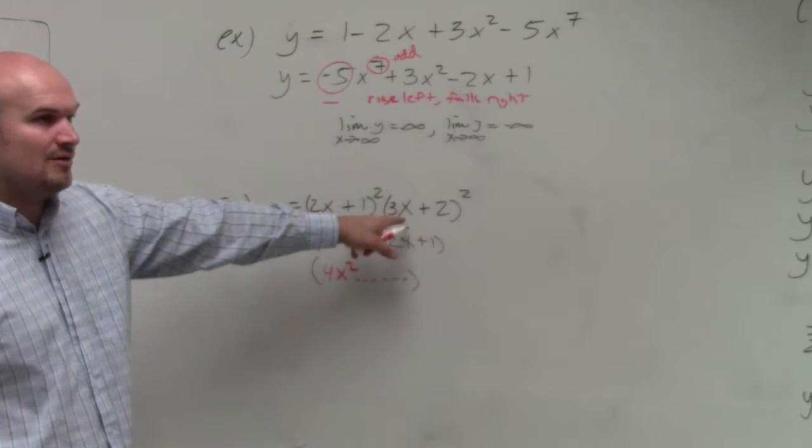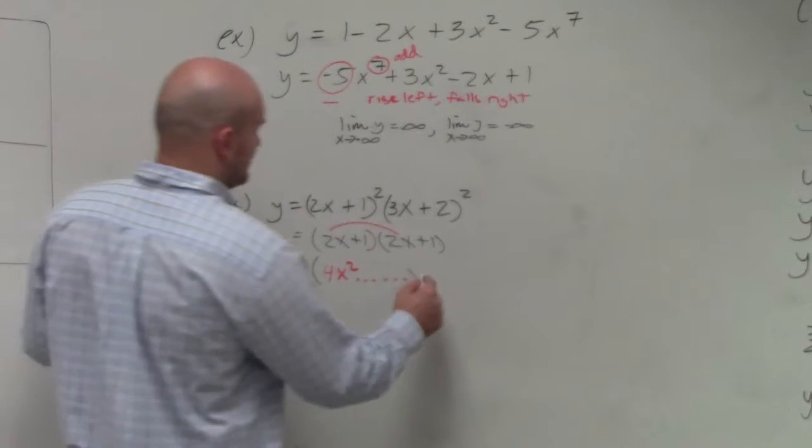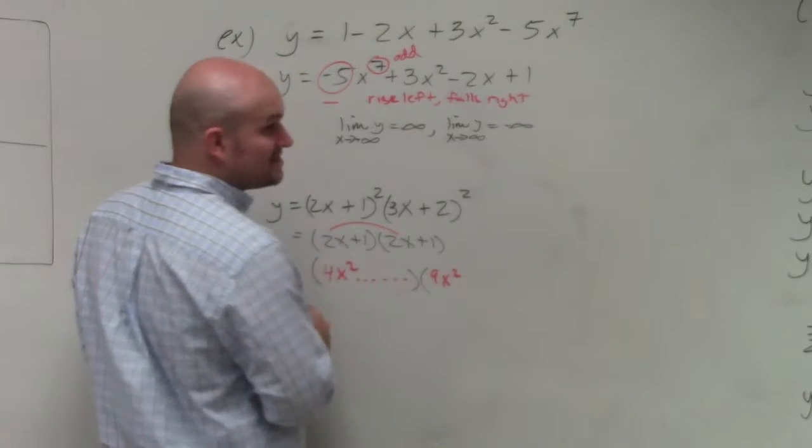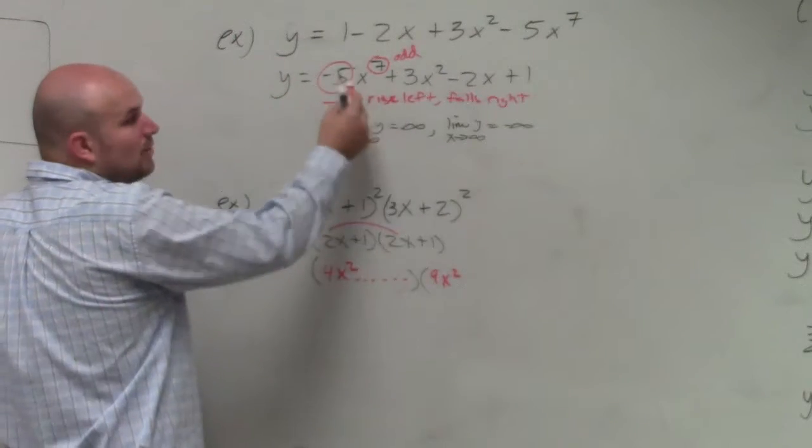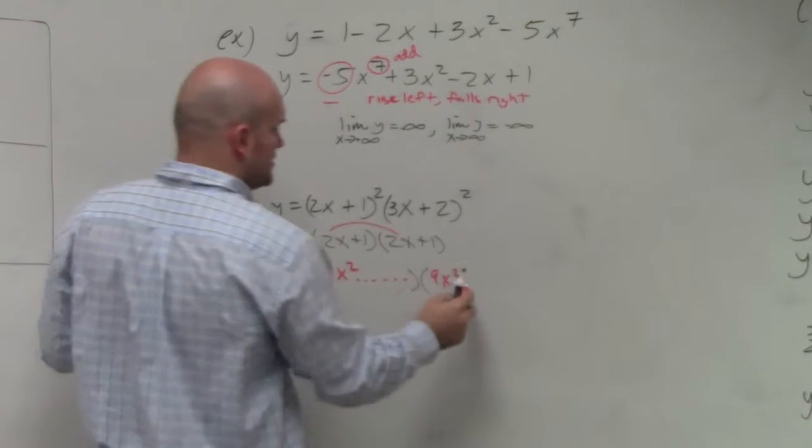Now, if I were to multiply these two out, what would be my largest, what would be my leading term? 9x squared. And do we really care what the rest of it is? No, because what do we only care about? We only care about the leading term. We don't care about all of that. So that's 9x squared.